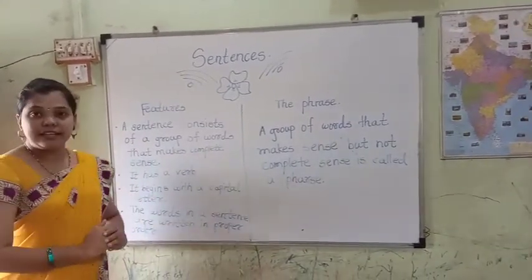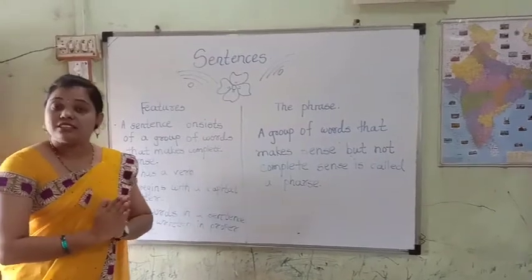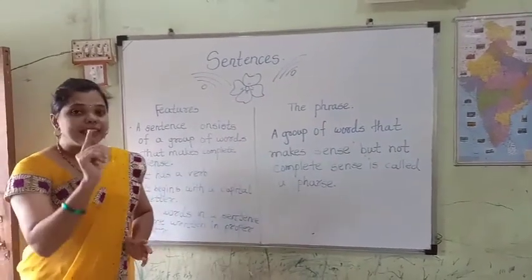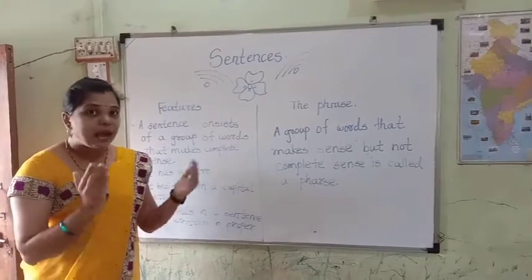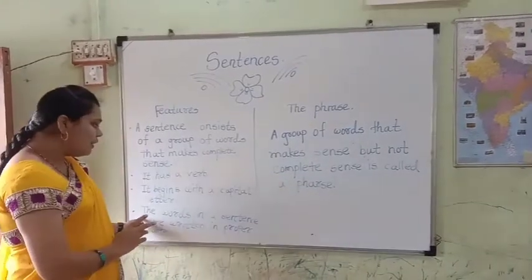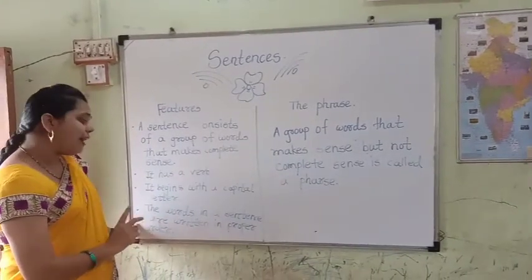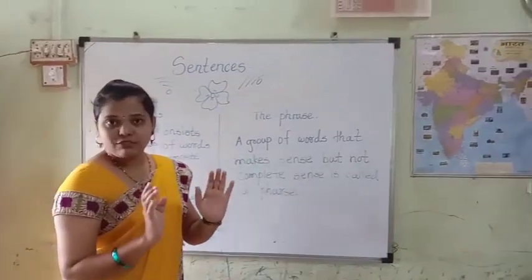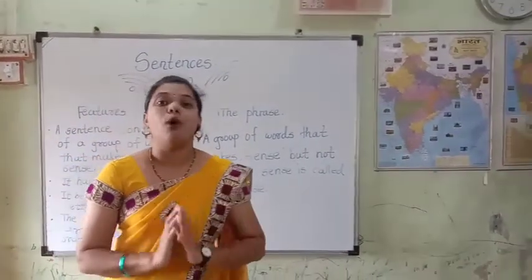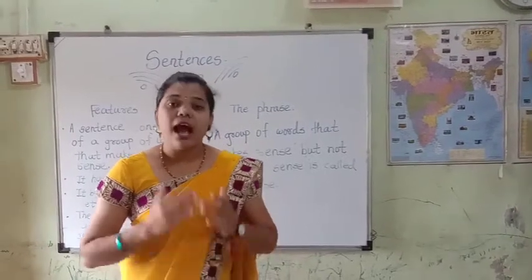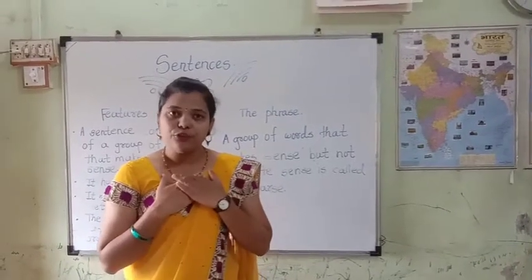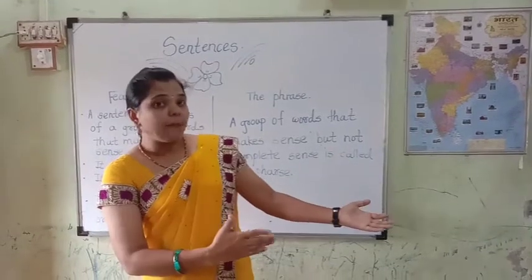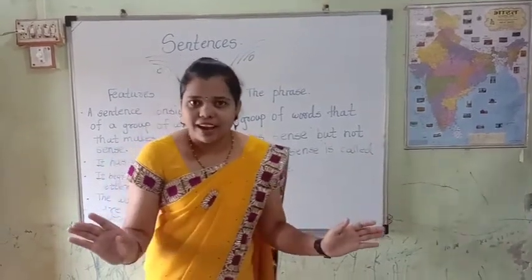Number three: it begins with a capital letter. Whenever we are starting any sentence, that sentence begins with a capital letter. The words in a sentence are written in proper order. Means whichever sentence we will see, that will be in proper order. Why? I am going to market — I can't say 'market, I am going to' — I can't say it that way.